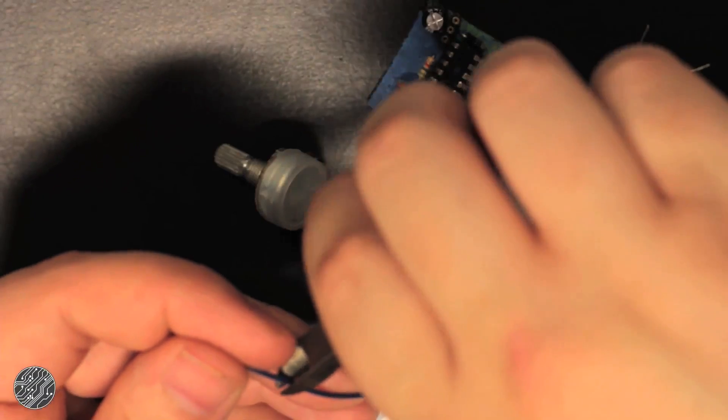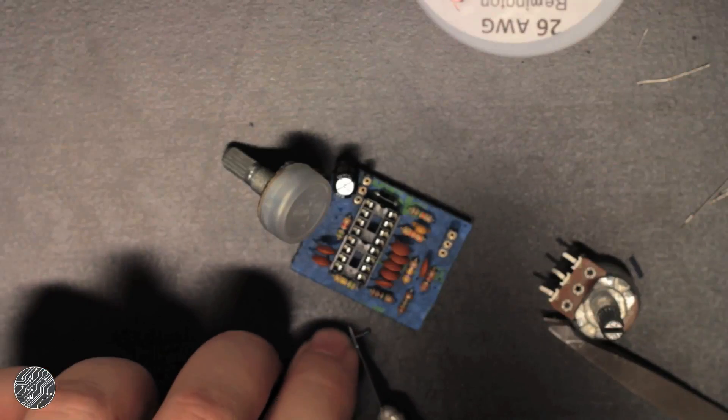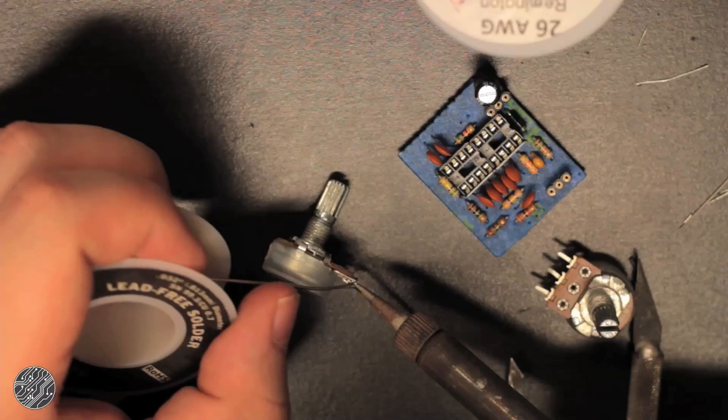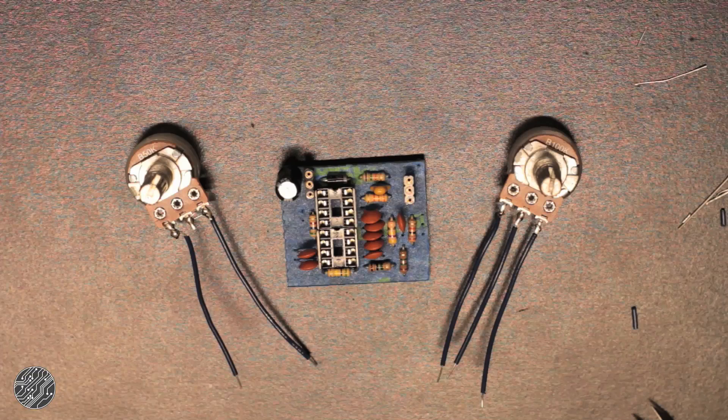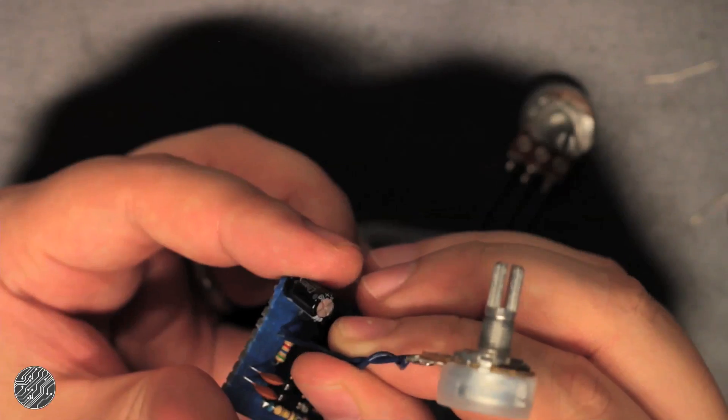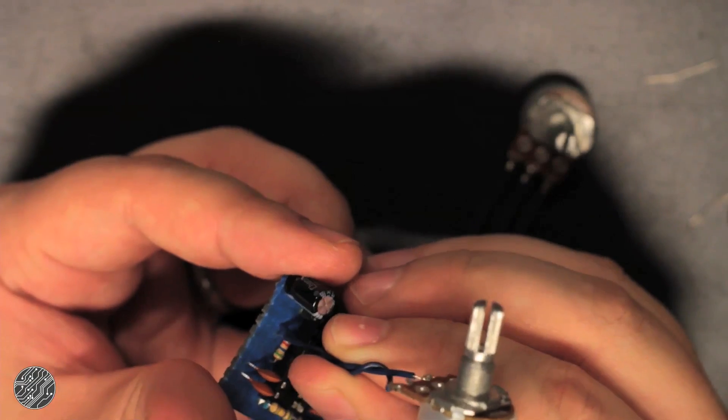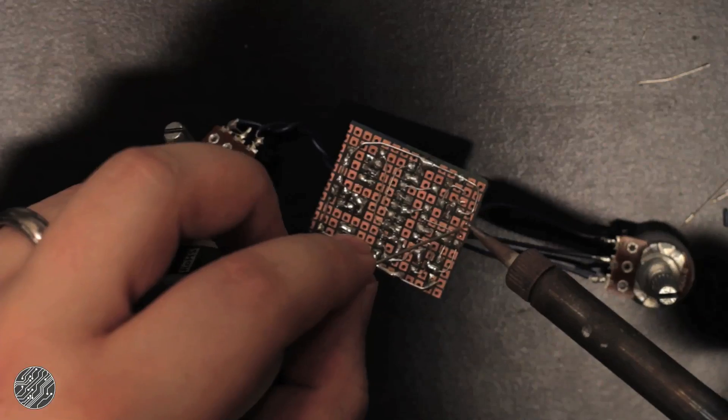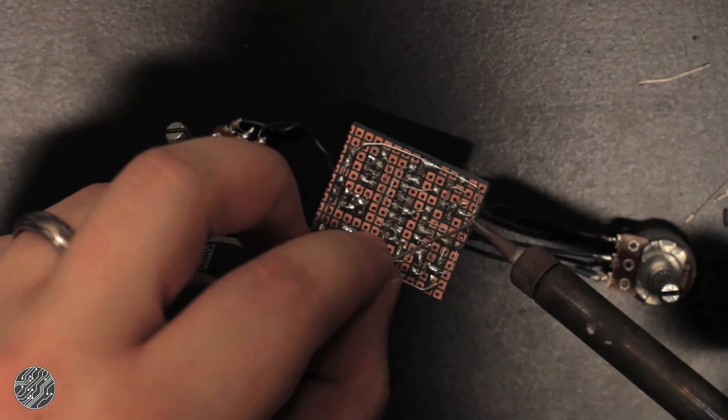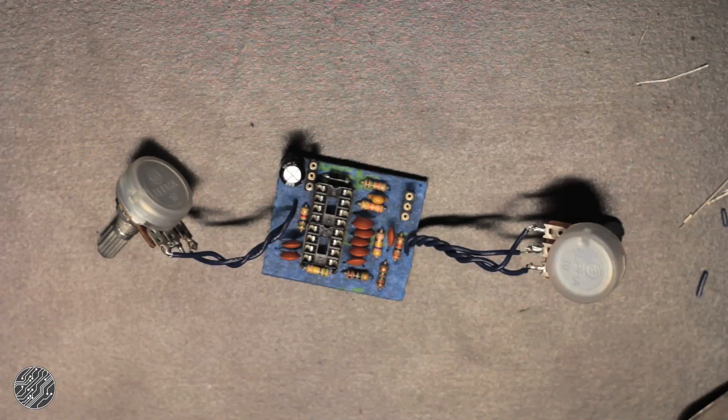Then measure and cut hookup wire and solder them to the pots first. Here I'm using 26 AWG solid core hookup wire. Once complete, solder the hookup wires to their corresponding pads on the circuit board. I like to braid or twist the hookup wire, mostly for aesthetic reasons, but it's not all that necessary.